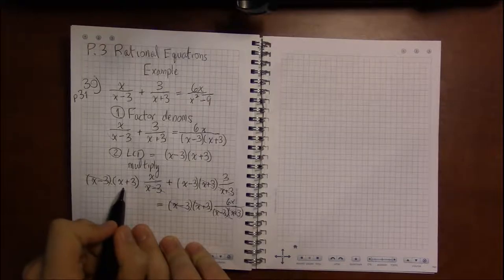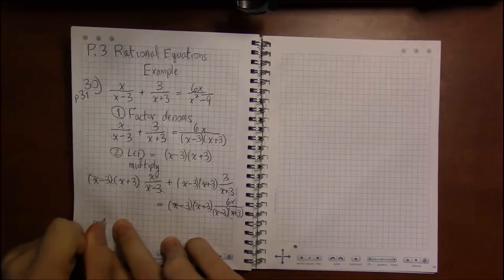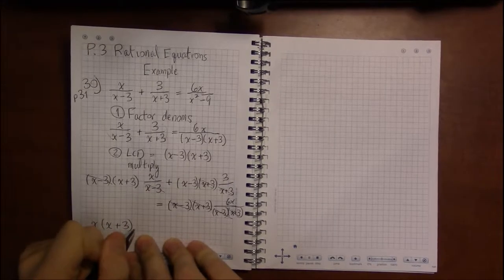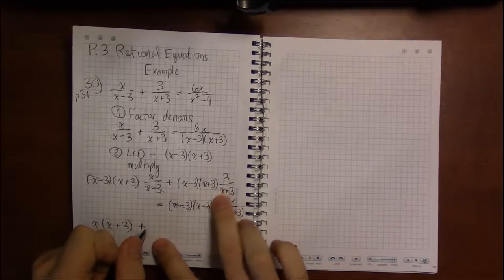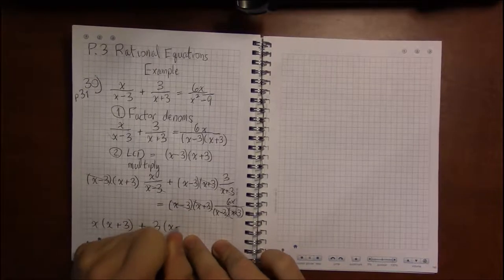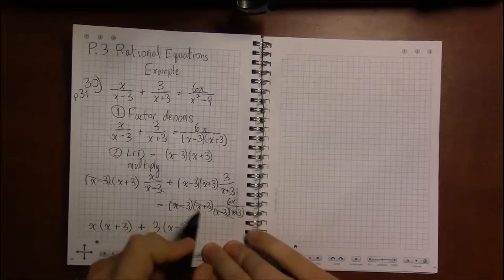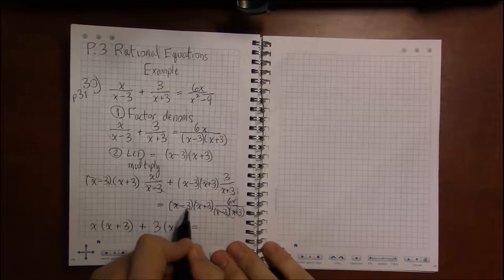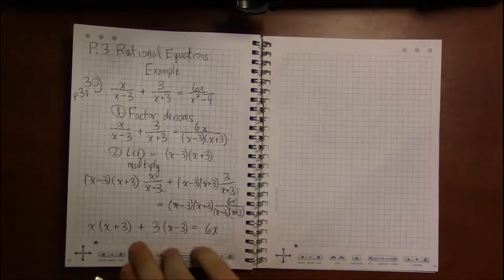So what are we left with? We're left with x plus 3 times x, or x times x plus 3, reordering those factors in the first term. In the second term, x minus 3 times 3, which is the same as 3 times x minus 3. And then on the right-hand side, we have just 6x.